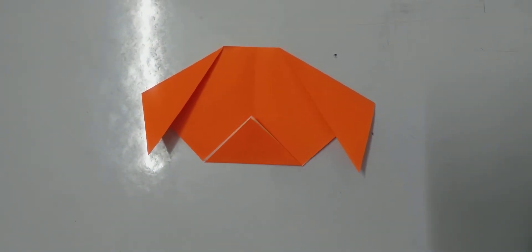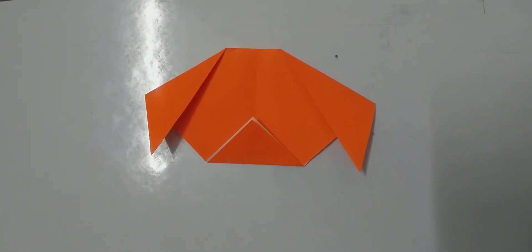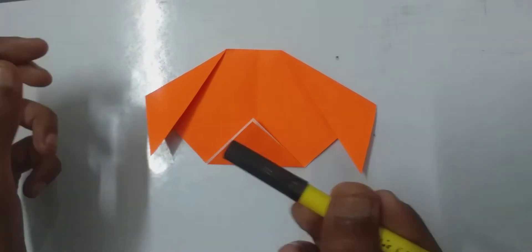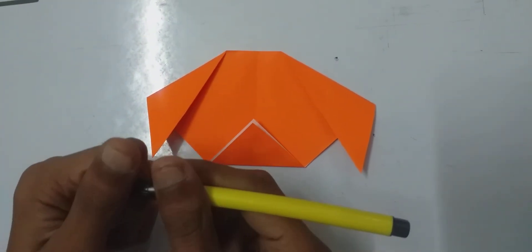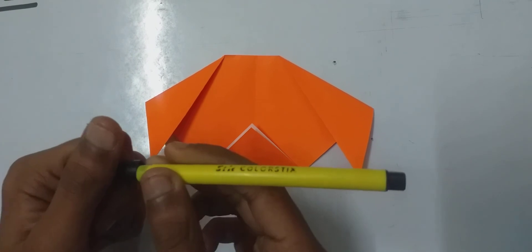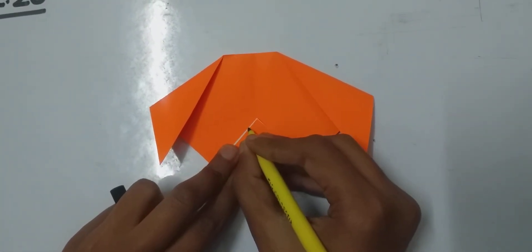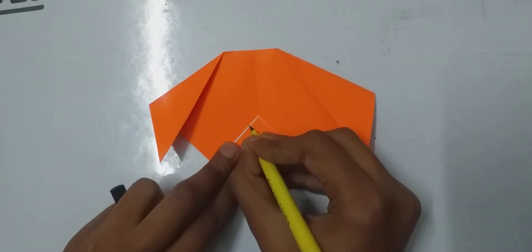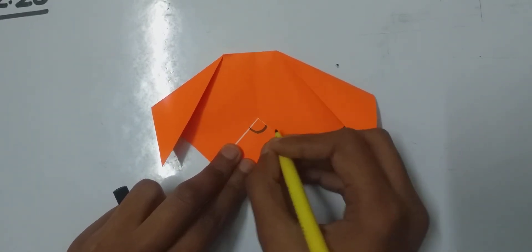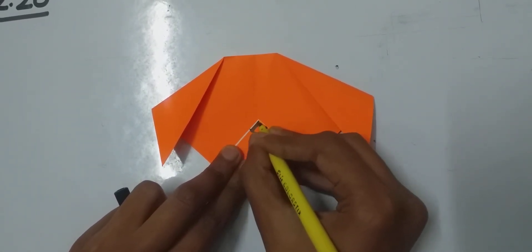Now take one sketch pen and give your dog a face by drawing the eyes and nose. Alright.